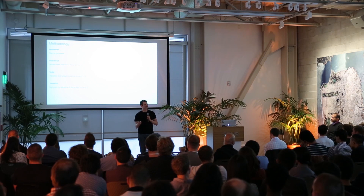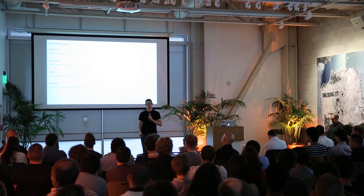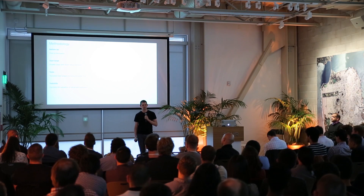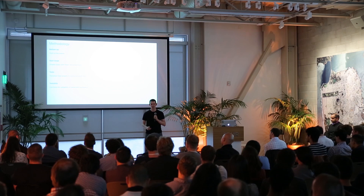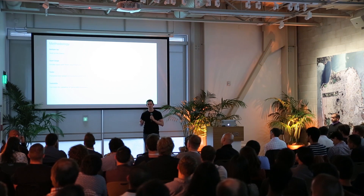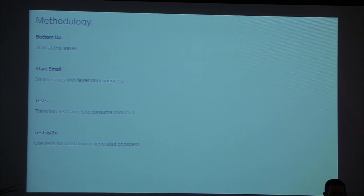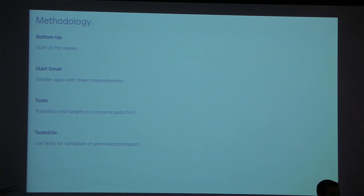And then finally, test again. Every library that we created a pod spec for, we also added an extra Xcode project, and this is built by CI. So every time that library changes, CI builds that Xcode project, which consumes that pod spec, so that we can verify we never publish a pod spec that cannot actually be consumed by one of our apps. There's never going to be a phantom version 4.3 out on the spec server that everyone just needs to worry about forever. It's not going to happen.